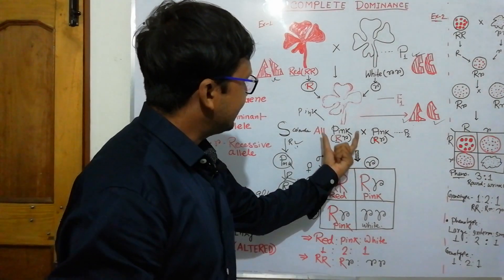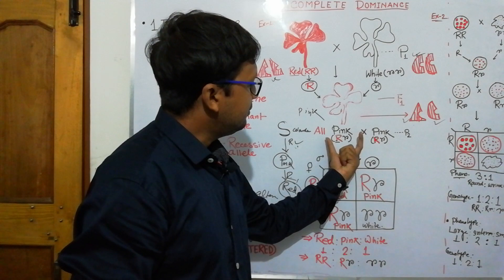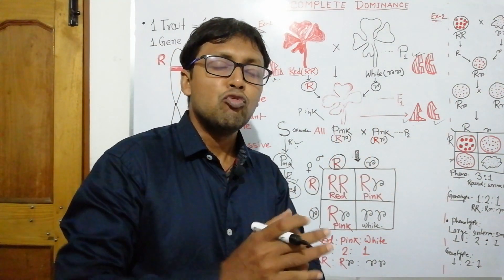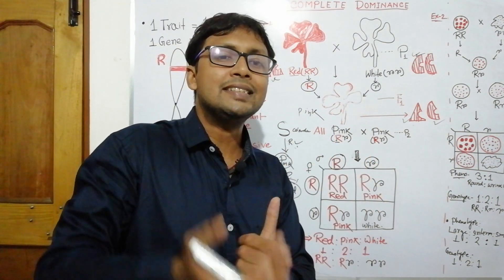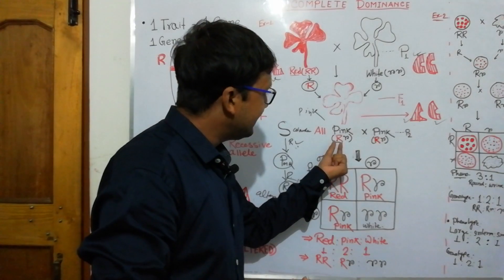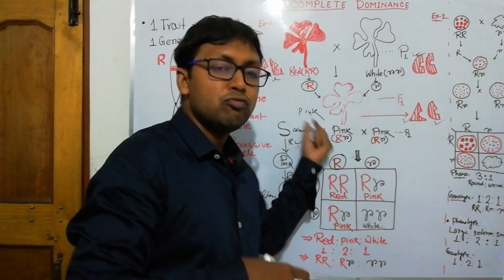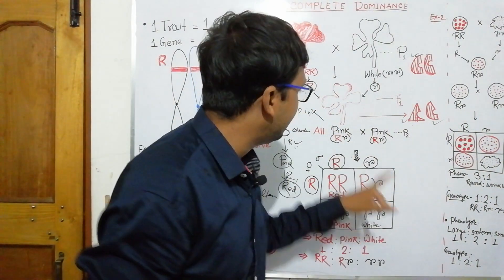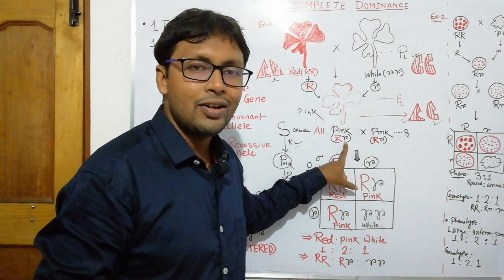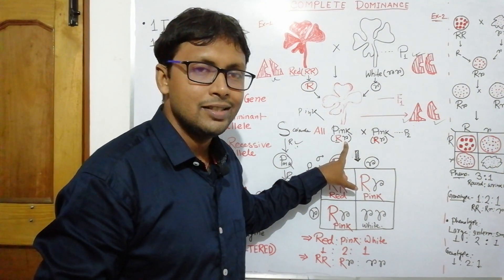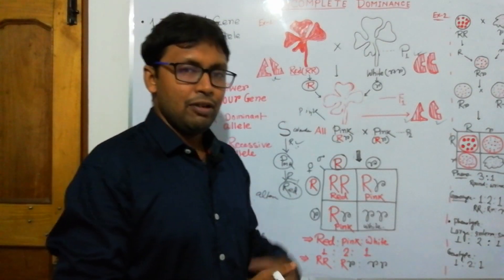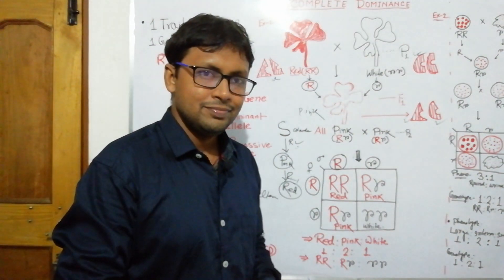In this F1 case, full dominance has not occurred — the dominant allele R has not fully dominated over the recessive allele small r. That is why pink color developed instead of red.